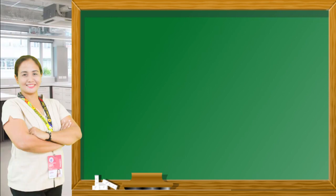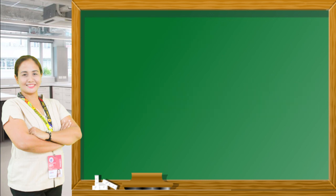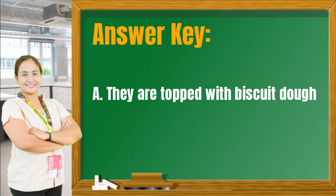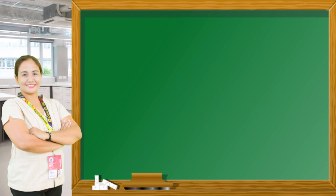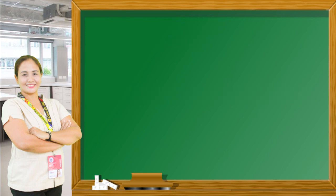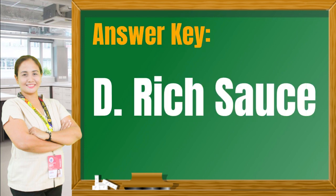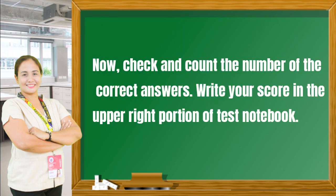Now let us check your answers. Number one — the answer is letter B, mango float. Number two — the answer is letter A, they are topped with biscuit dough. Number three — letter B, complex or complicated flavor. Number four — letter D, sugar. Number five — letter D, rich sauce. Check the number and count your correct answers, and write your score in the upper right portion of your test notebook.